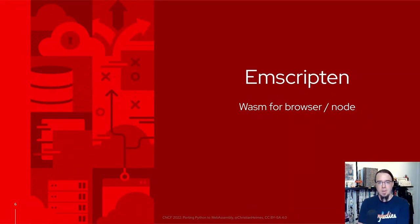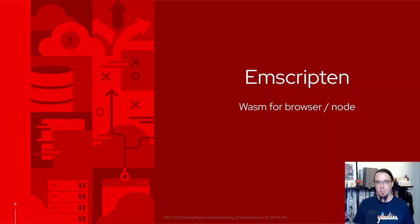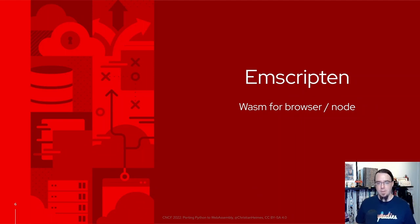First part: Emscripten. If you're not familiar with Emscripten, it's a toolchain and SDK to compile C and C++ code to WebAssembly, targeting browsers or Node.js. There's usually some kind of JavaScript glue layer implemented that provides a syscall layer, a virtual file system, and other features.